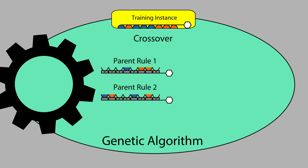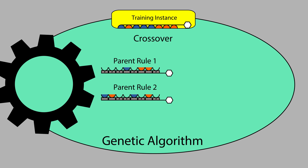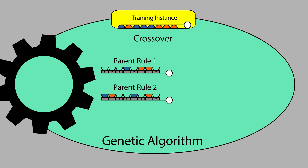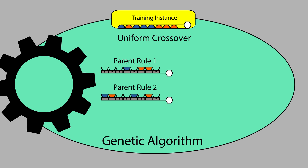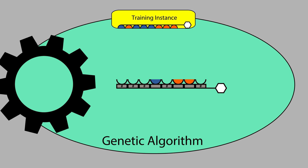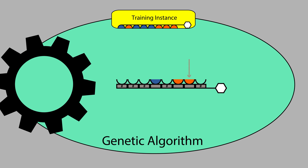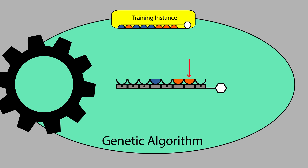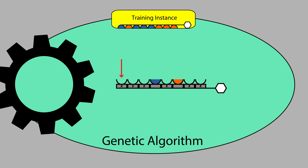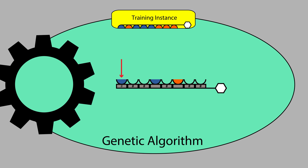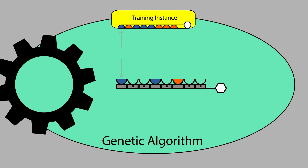Crossover is applied first according to a user-defined likelihood. While there are various crossover strategies, uniform crossover is particularly well suited to generating diversity. Both crossover and mutation modify offspring rules by either changing a specified attribute into a wildcard, or turning a wildcard into a specified attribute that has the value seen in the current training instance.